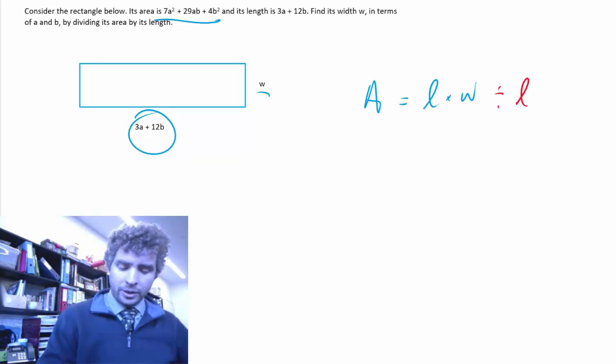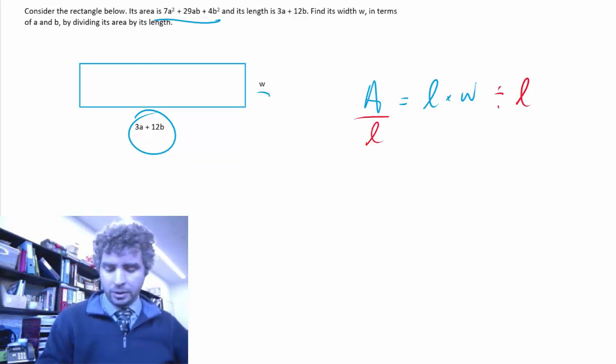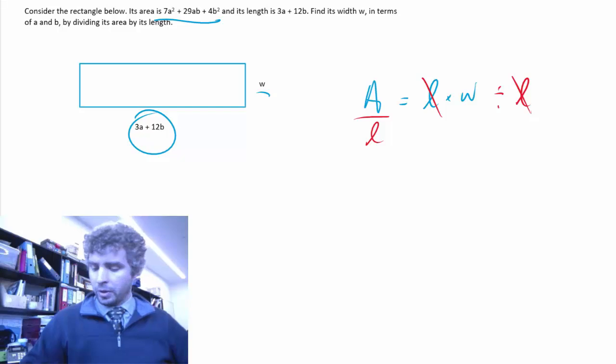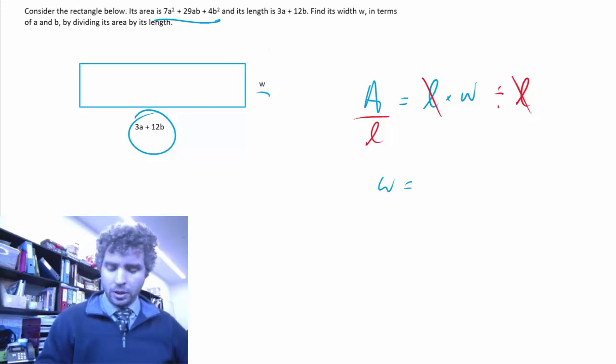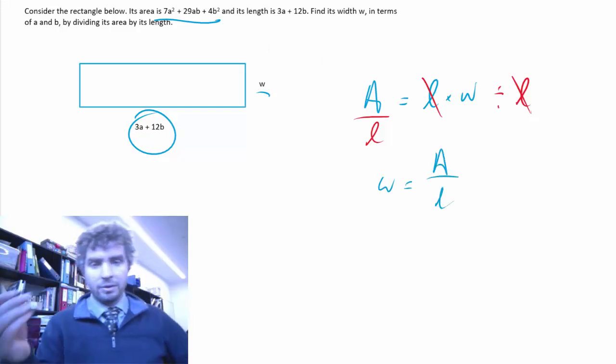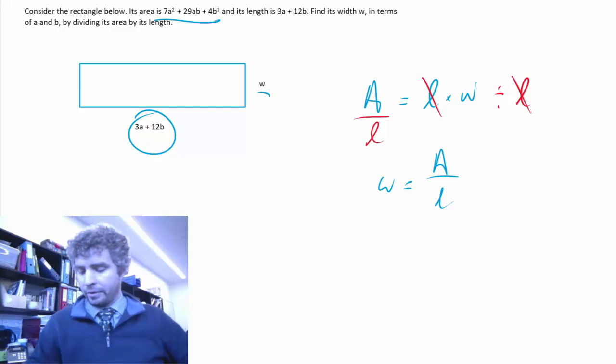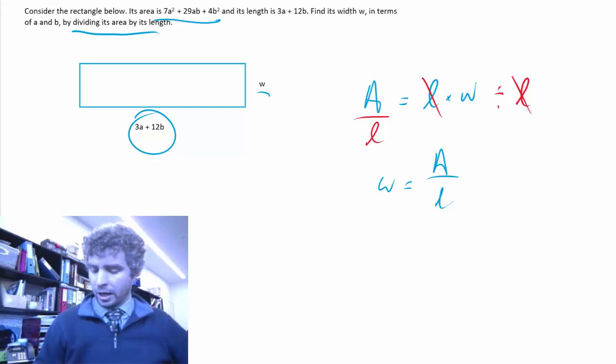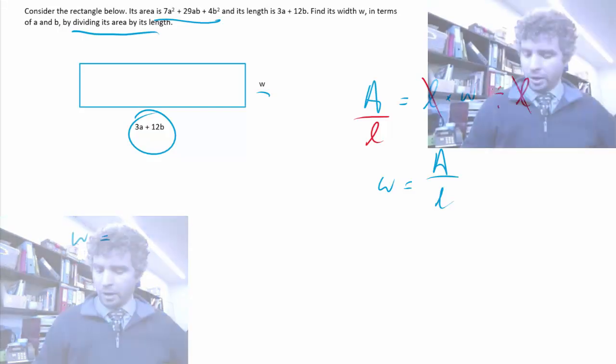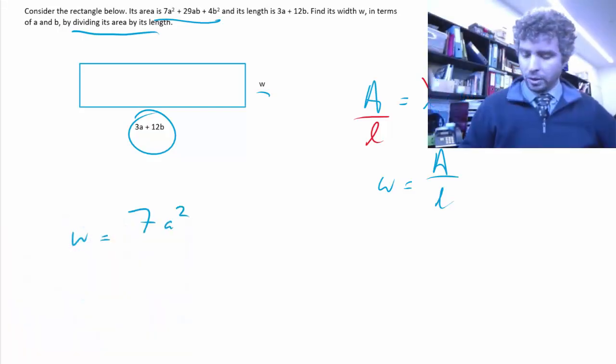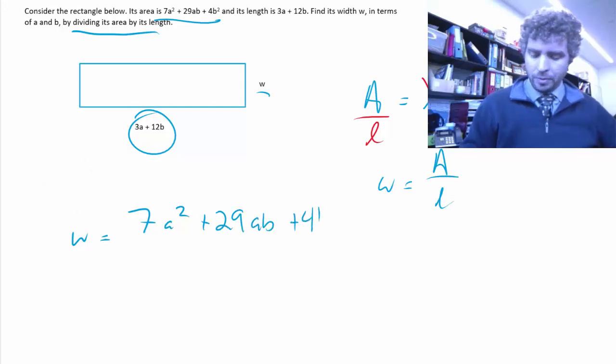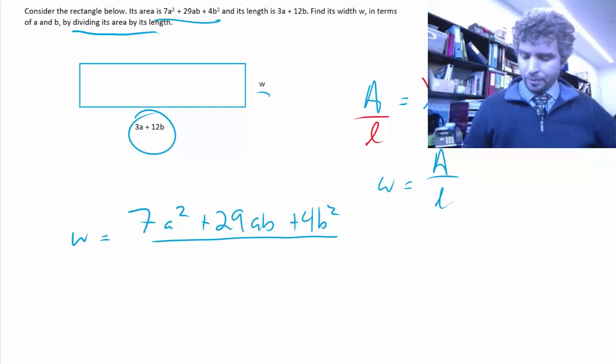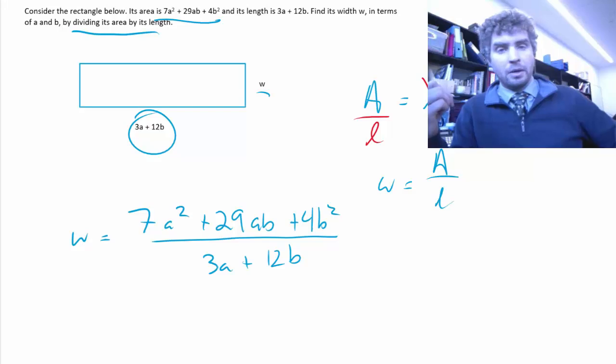So, what they've done here is they've said, if we divide both sides by length, then we get our equation for w in terms of area and length. So, we divide the area by the length. Now, they've already told you that that's what you're supposed to do. So, you just have to take that expression for area, 7a squared plus 29ab plus 4b squared and divide it by 3a plus 12b.